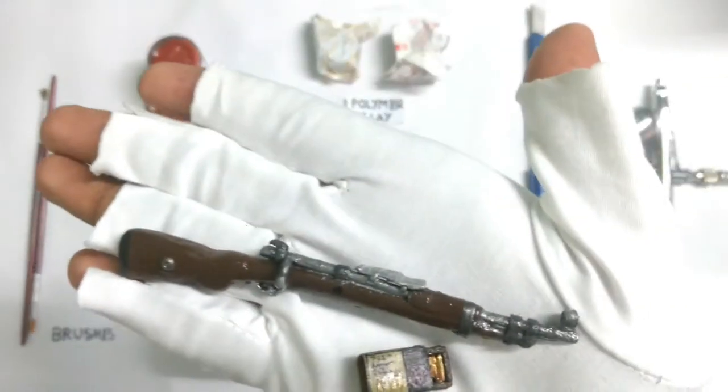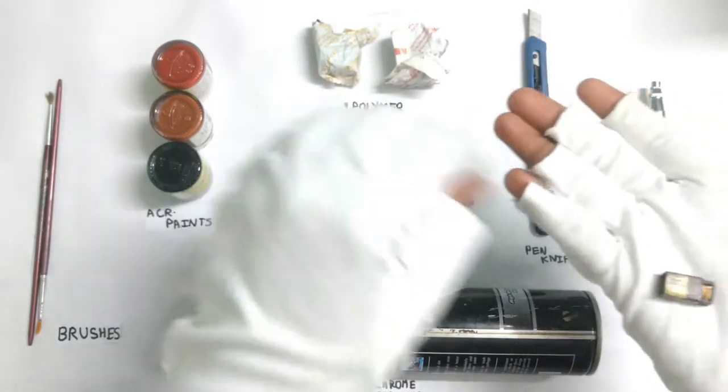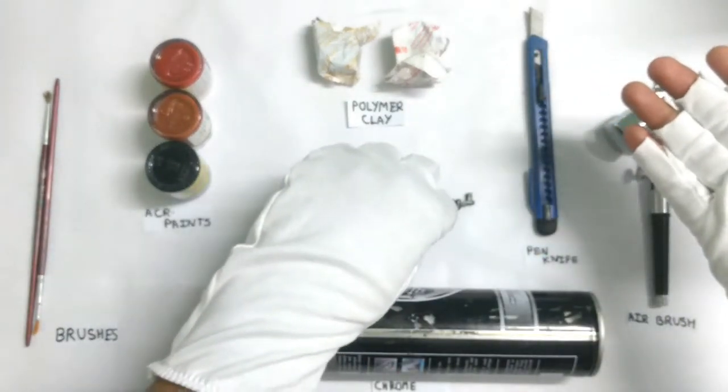Now I have already shown you how to make the AWM in the previous video. So yeah, now it's time to make the Kar98 and these are the materials you're going to need.